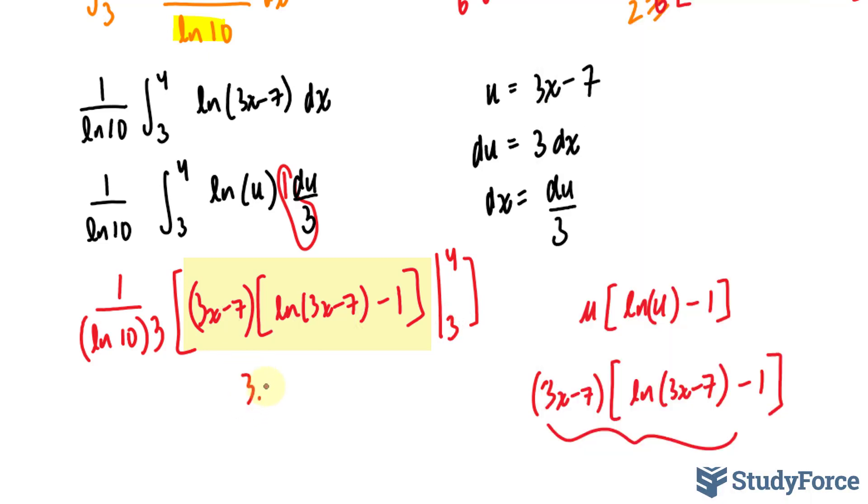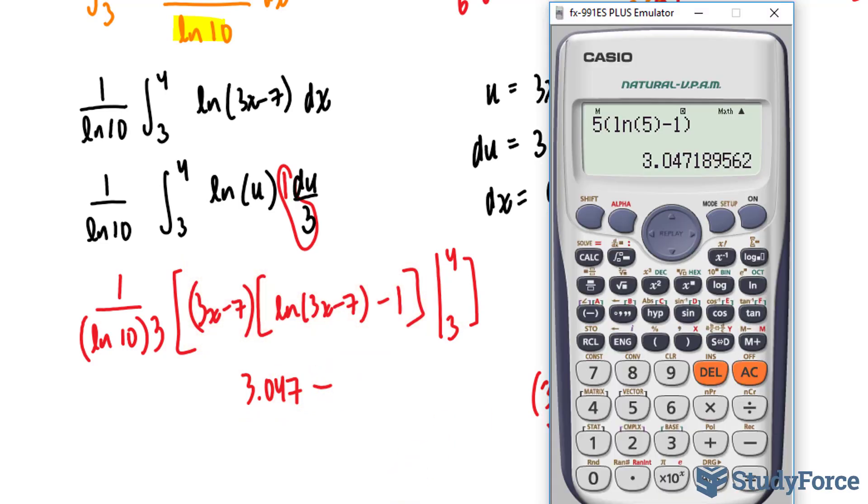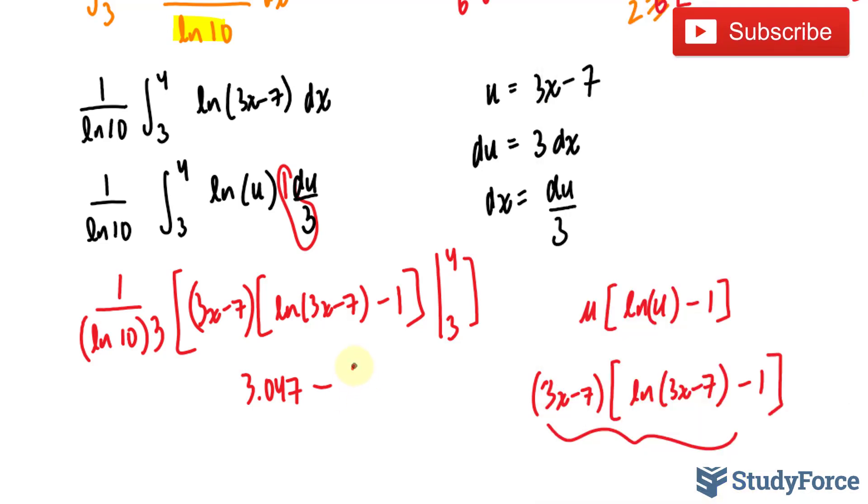I just found out what this is when x is equal to 4. 3.047 minus, now we're going to do the same thing, but when x is equal to 3. When x is equal to 3, 3 times 3 minus 7 is 2. So I'll replace these 5s with 2. And that gives me negative 0.613. Negative 0.613.